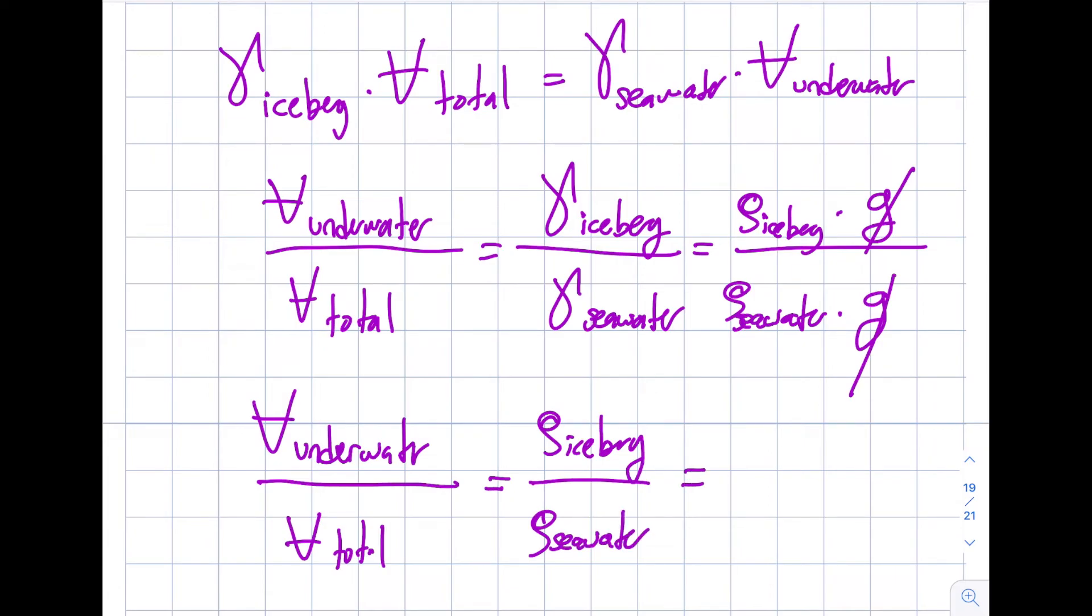Iceberg density was given to me as 917 kg per meter cubed, and this was given to me as 1,030. And from here you can see when you do it, you're going to get right around 89.